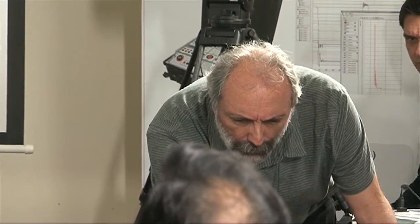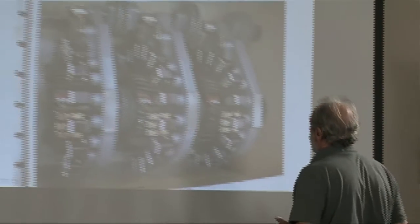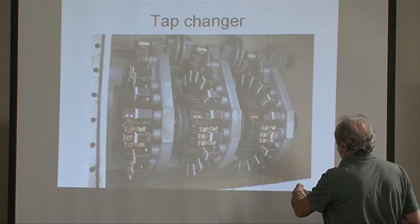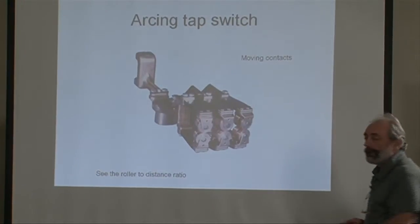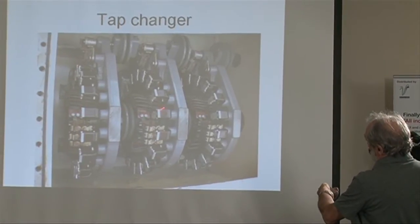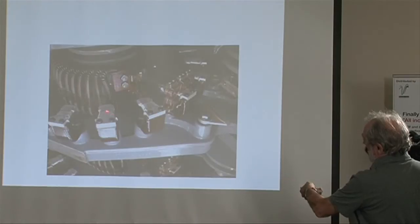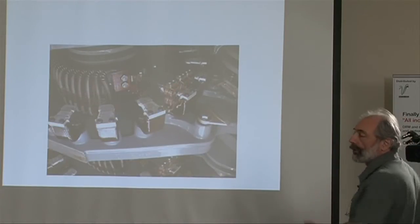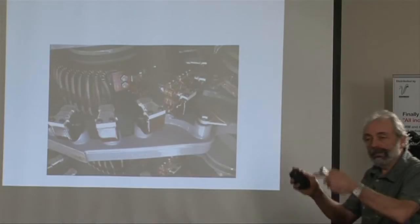Here is a tap changer. The three fingers of the moving contact and the white surface here that you can see is the fixed stationary contact. So these rollers go around and make contact from tap to tap.